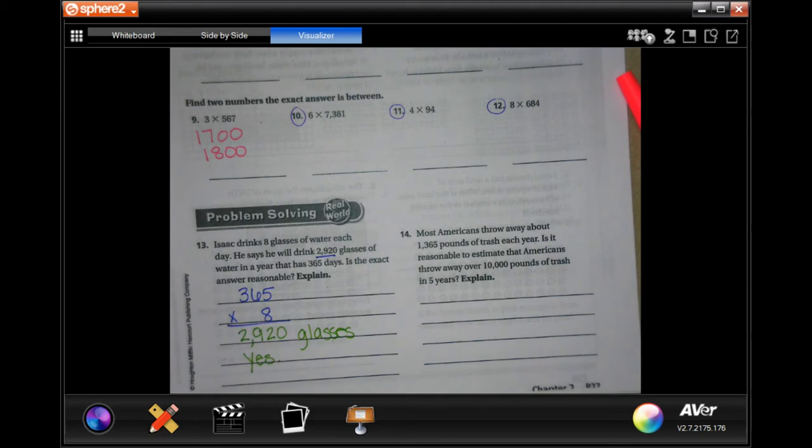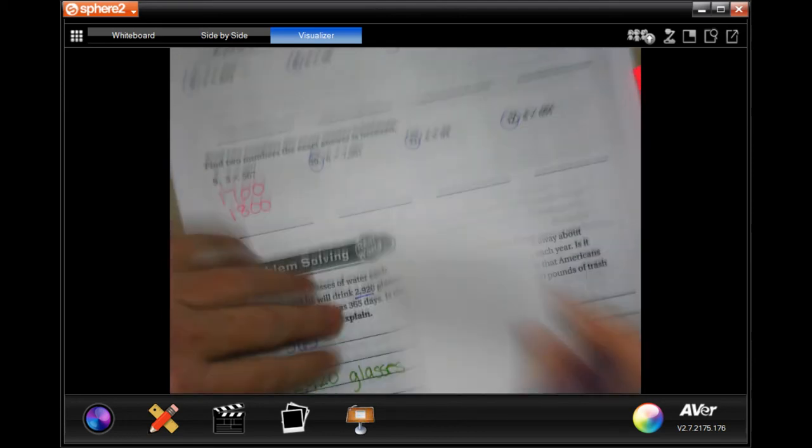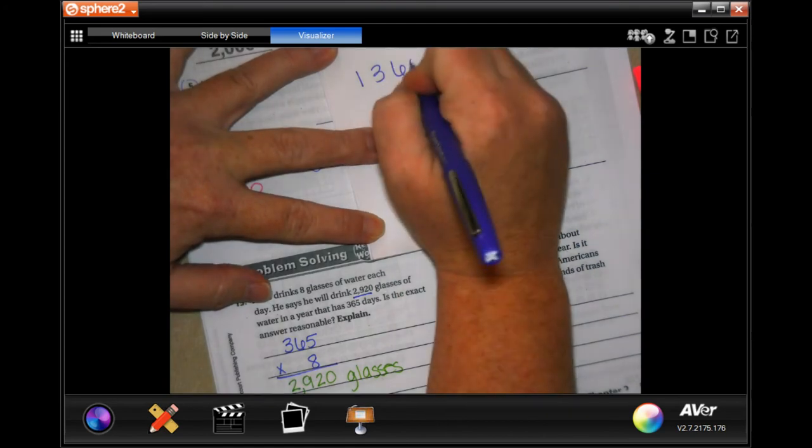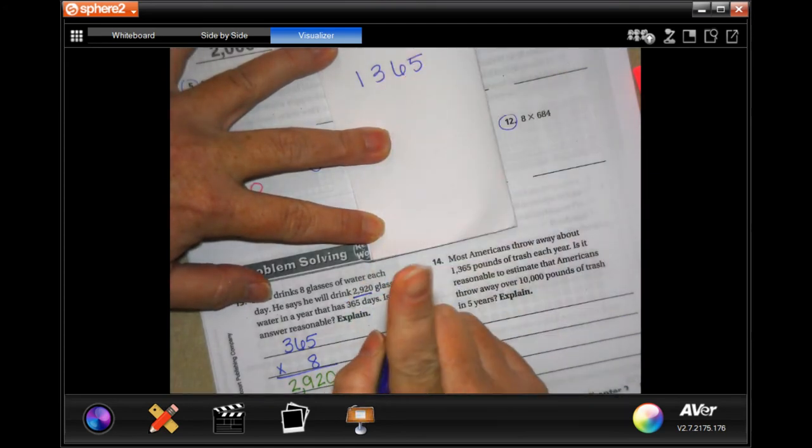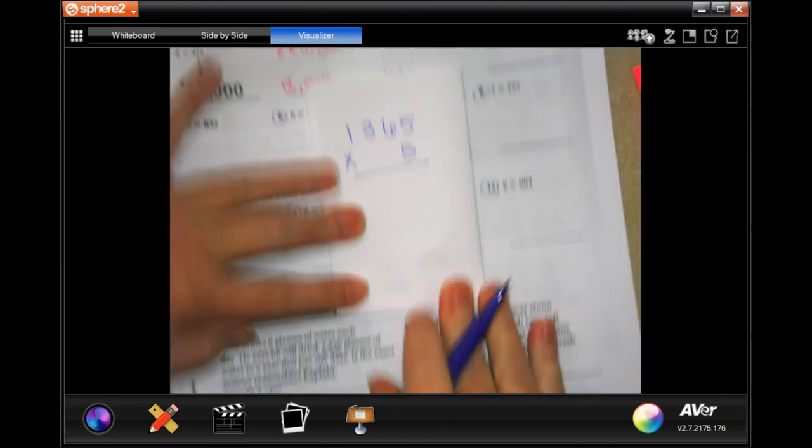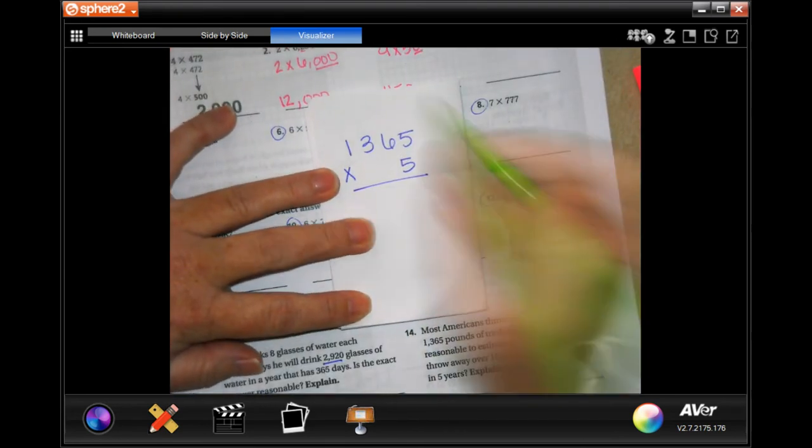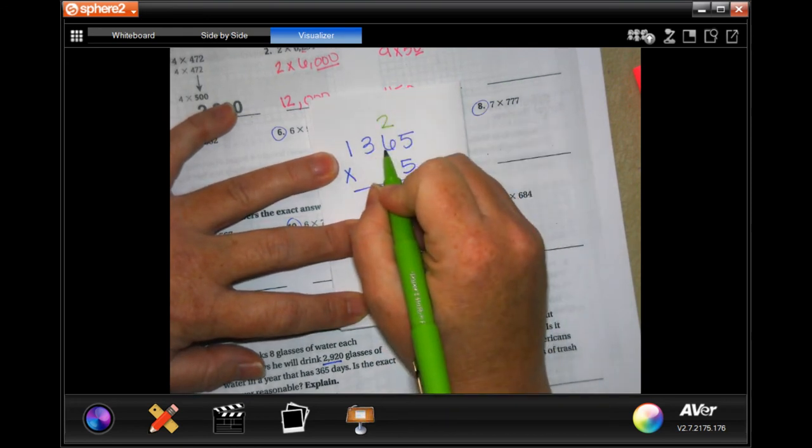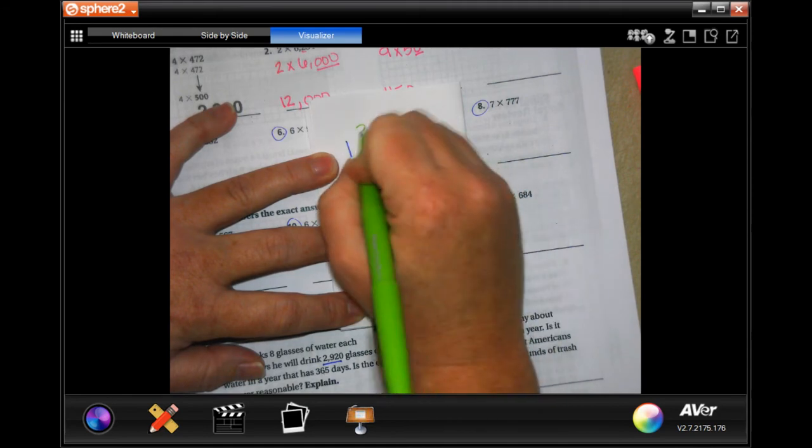Most Americans throw away about 1,355 pounds of trash each year. Is it reasonable to estimate that Americans throw away over 10,000 pounds of trash in five years? So we have the 1,365 pounds in one year, but we need it in five years, so we're going to multiply that by five. Five times five is 25, carry your two. Five times six is 30, plus two more is 32, carry your three.